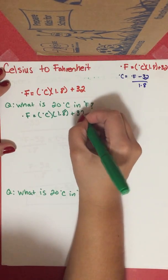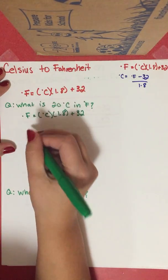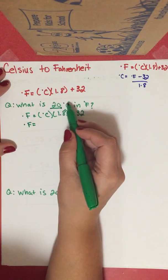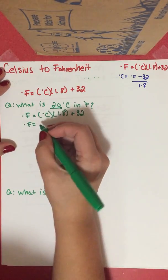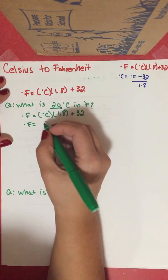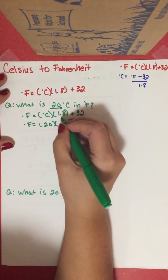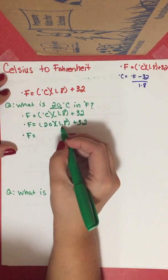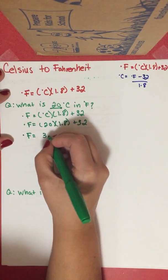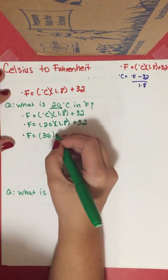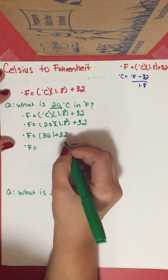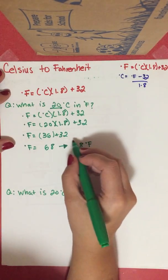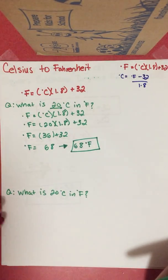So degrees Fahrenheit equals — we're plugging in just the number, not writing degrees Celsius since we're solving for Fahrenheit. Degrees Fahrenheit equals 20 times 1.8 plus 32. 20 times 1.8 is 36, plus 32 equals 68. So our final answer is 68 degrees Fahrenheit.